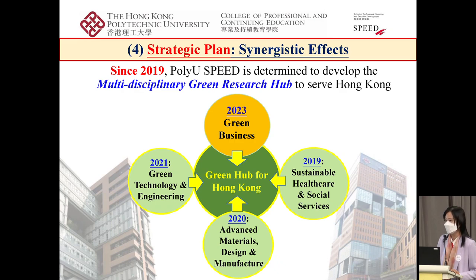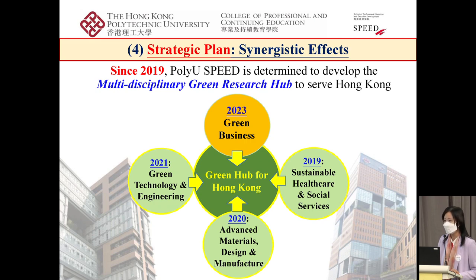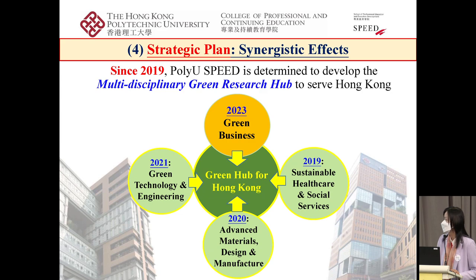What is our strategic plan? By having this research center, we will have a synergetic effect among all existing research centers in PolyU Speed. Since 2019, PolyU Speed has been determined to develop a multidisciplinary green research hub to serve Hong Kong. Thanks to UGC's support: starting from 2019 we received funding for the sustainable healthcare center; in 2020, for advanced materials design and manufacturing; in 2021, for green technology and engineering. So this year, we propose green business to complete a comprehensive research hub to serve Hong Kong.